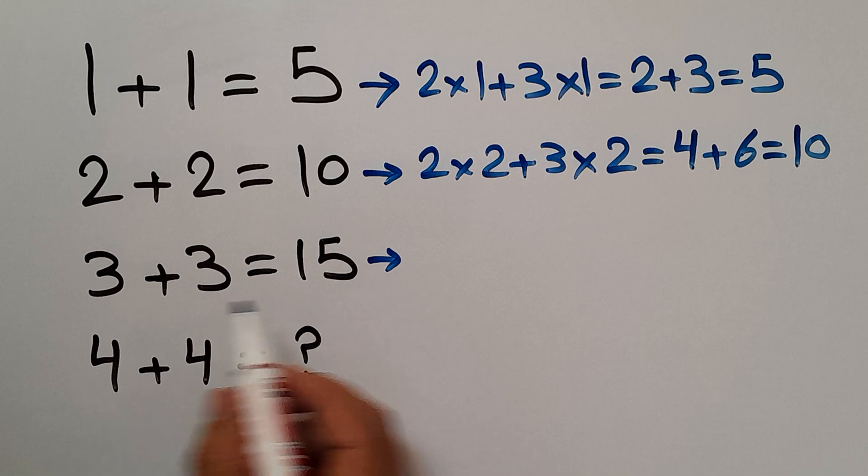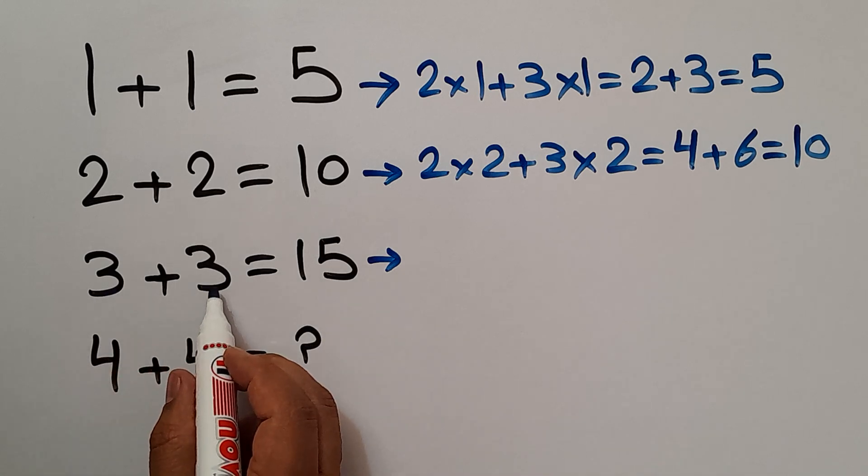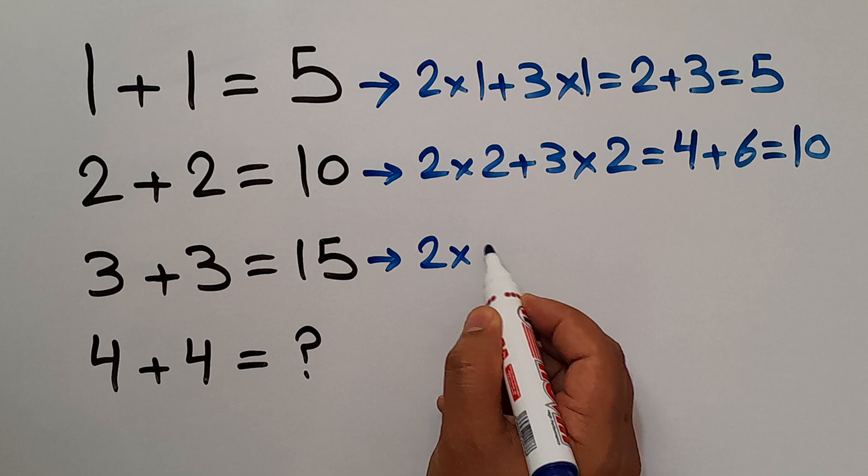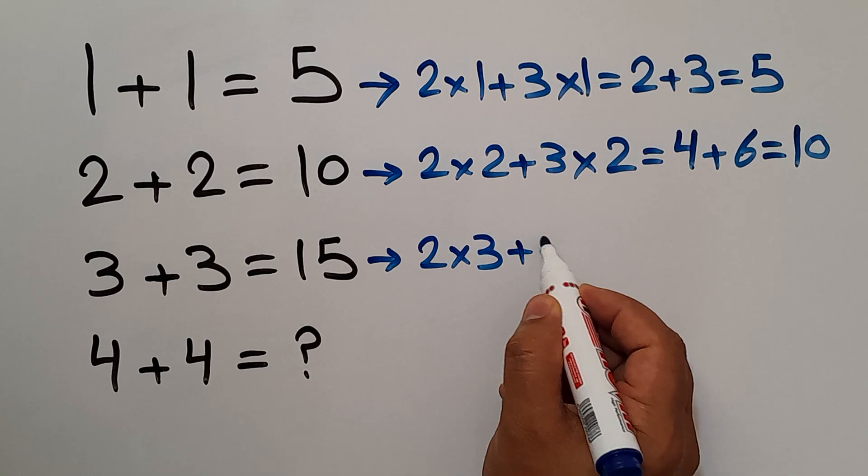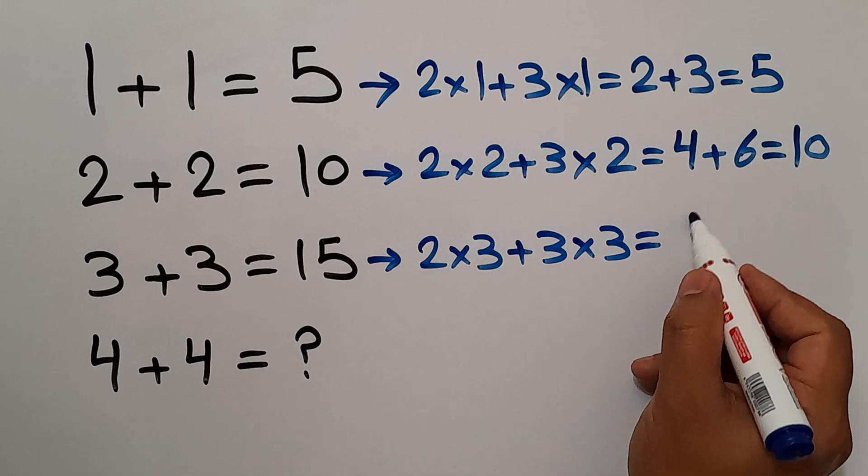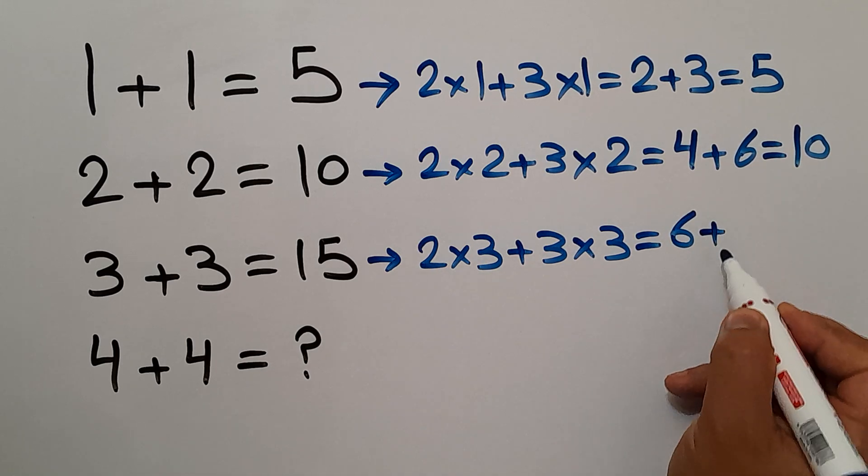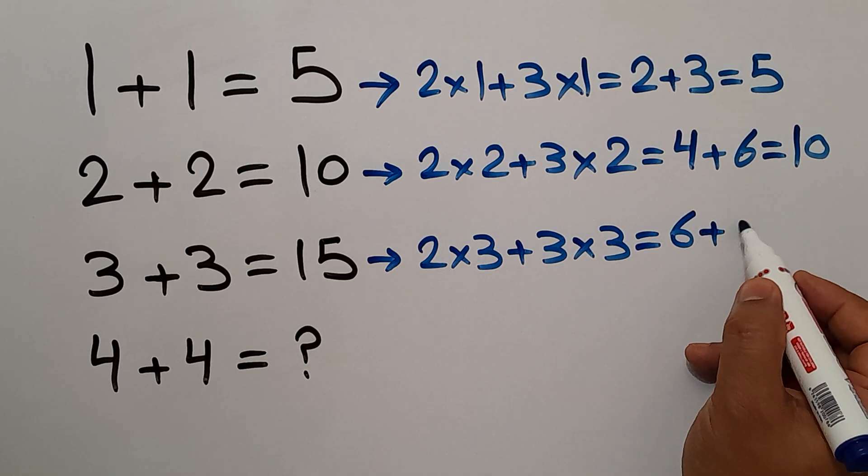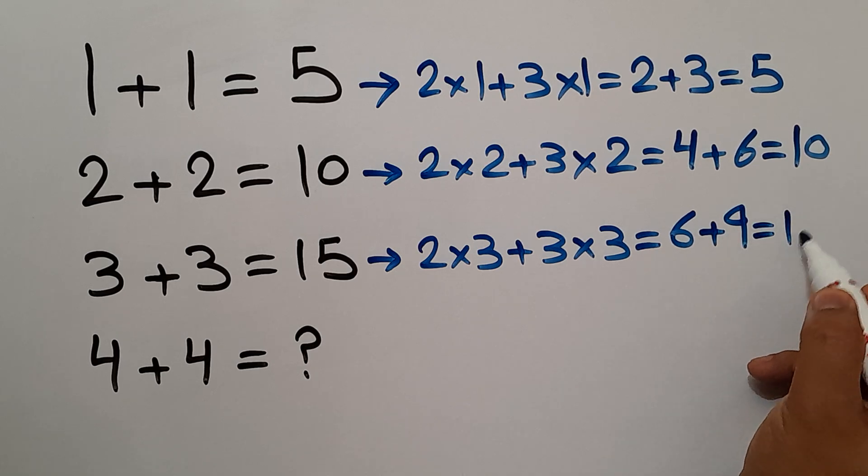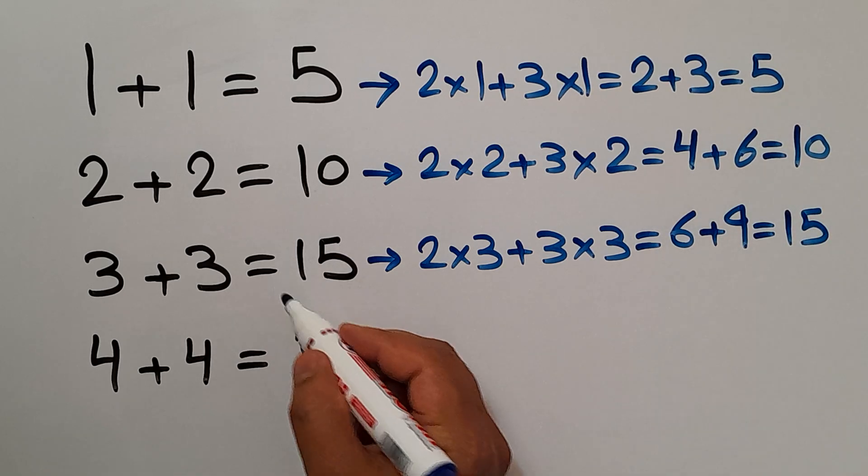In the third line, we have 3, 3, and 15. 2 times 3 plus 3 times 3 will be equal to... This is 6 plus 3 times 3, which gives us 9. And 6 plus 9 equals 15, the right-hand side number.